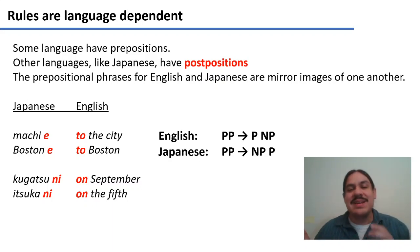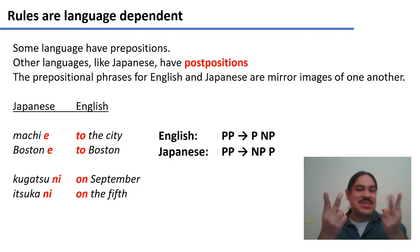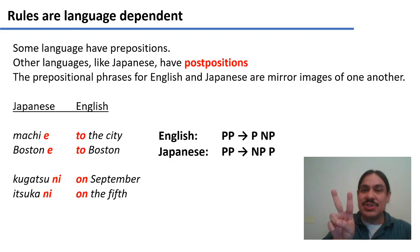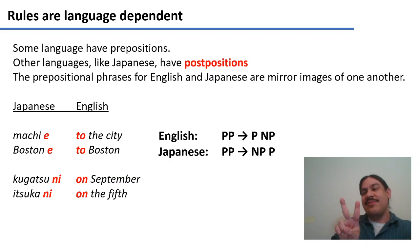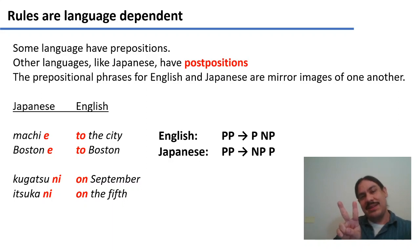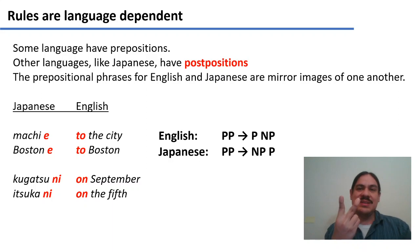English is also the mirror image of Japanese, and this happens in many languages. Sometimes you can have preposition-noun phrase order, or noun phrase-postposition order. You can have verb before direct object, or direct object before verb. In English, you eat pizza; in Japanese, you pizza eat. The exact shape of the rules will depend on what language you're trying to parse.